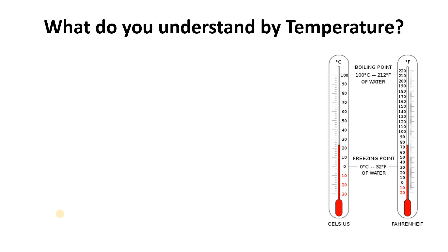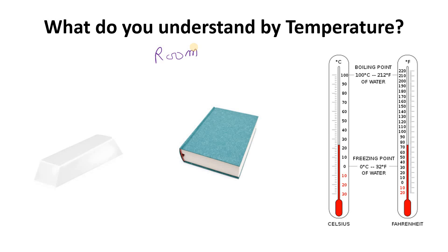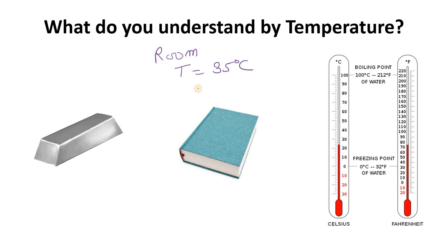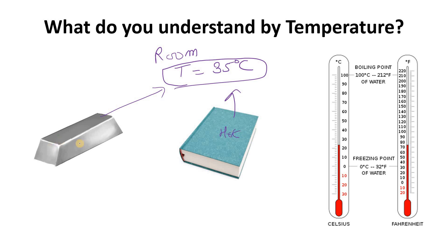Now there is a question: what do you understand by temperature? Consider one room where there is one book and one iron bar, and the room temperature is 35 degrees Celsius. If I ask you what is the temperature of this book, you will say 35 degrees Celsius. And what is the temperature of the iron bar? Also 35 degrees Celsius. But if you touch this book, you will feel hot. But if you touch the iron bar, you will feel cold.